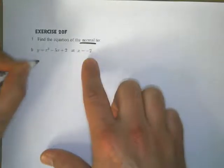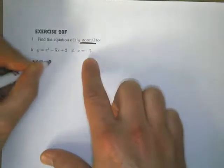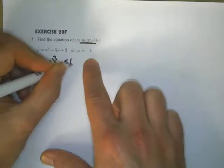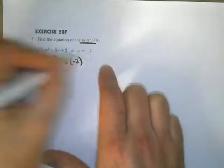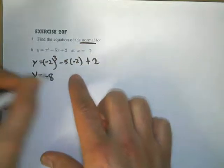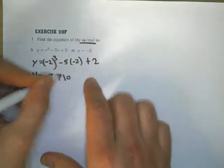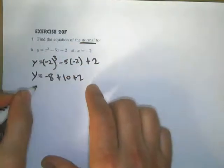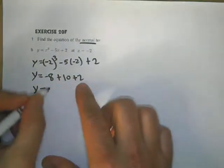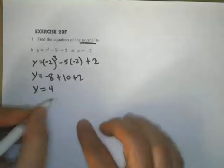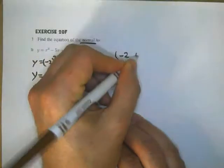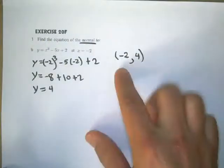If I plug in negative 2 for x, then we get y equals negative 8 plus 10 plus 2. So we get 4. We know that our point is negative 2 comma 4. That's the x value and the y value.